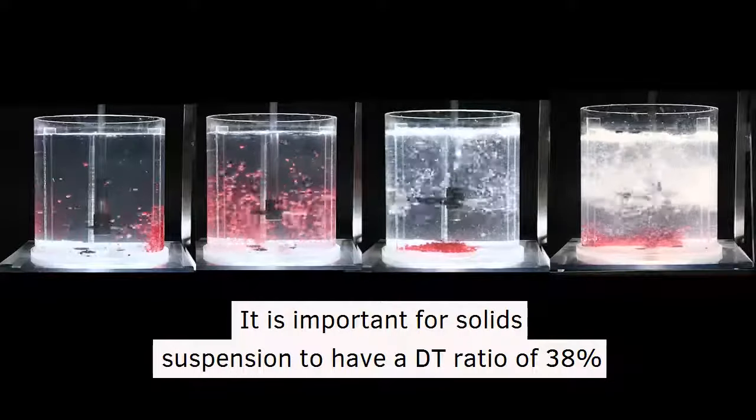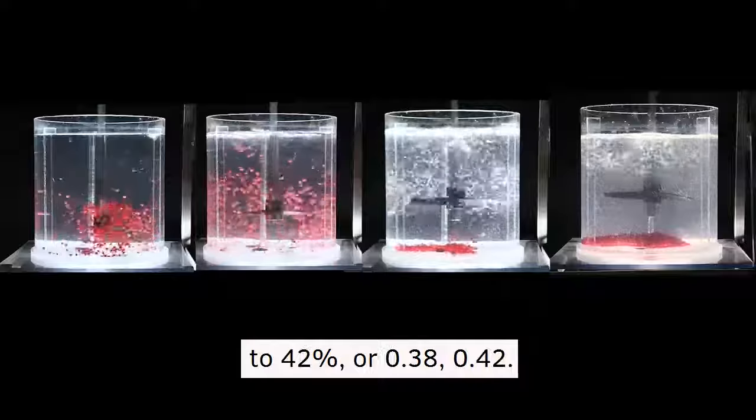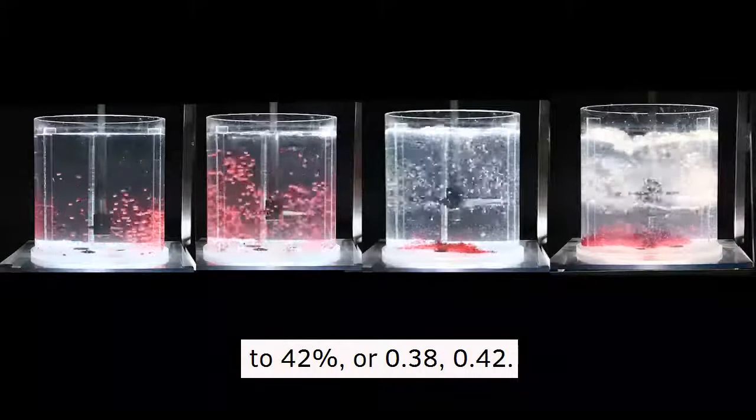It is important for solid suspension to have a dt ratio of 38 to 42 percent or 0.38 to 0.42.